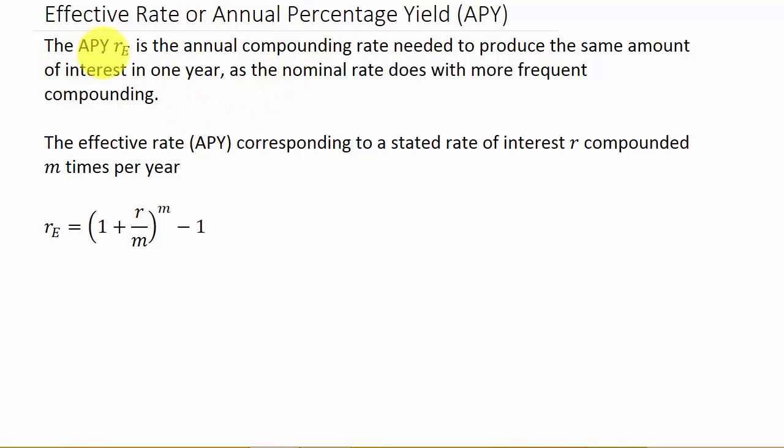The annual percentage yield, R sub E, that's the notation they use for it, is the annual compounding rate needed to produce the same amount of interest in one year as the nominal rate does with more frequent compounding.